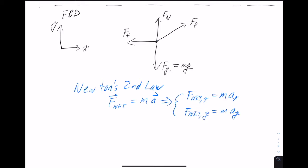Looking at this problem, we're told the object moves along the surface, so the person is not pulling hard enough to lift it off the surface. And since it's not lifting off or crashing through the surface, there's no acceleration in the y direction. So the y components are going to have to balance each other out — they equal zero. And because there's no acceleration in the y direction, we can drop the subscript and just call that the acceleration.